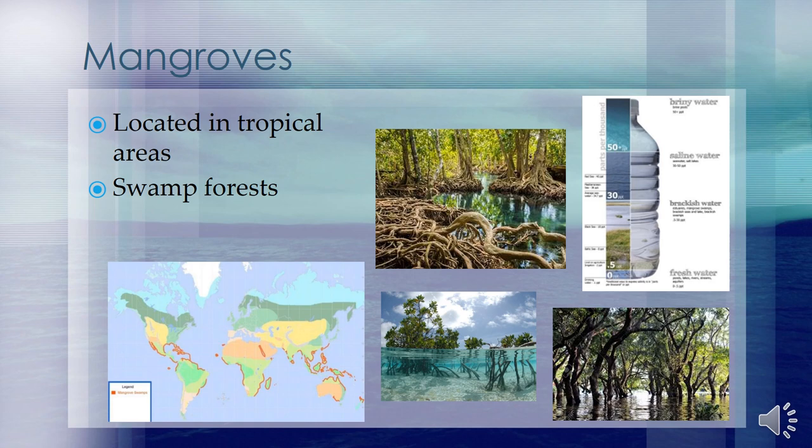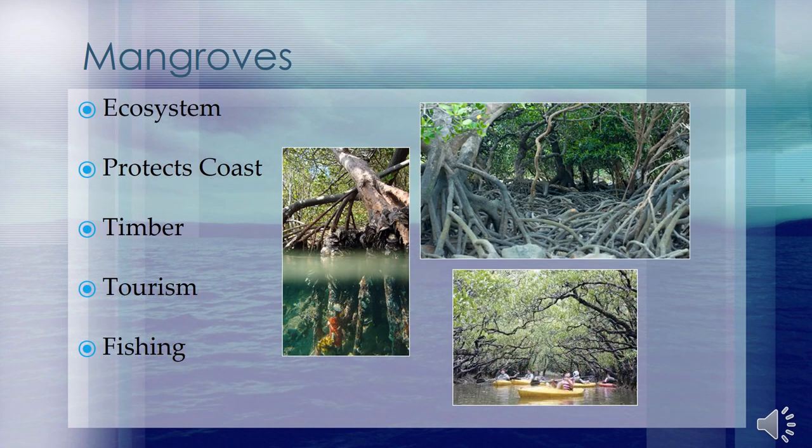Mangrove swamps cover 60–75% of tropical and subtropical coastlines. Mangroves are tropical trees and shrubs which grow in the intertidal zone in low energy and relatively sheltered shallow coastal and estuarine environments. Mangrove swamps are one of the most productive and biologically important ecosystems in the world because they provide unique products and services to both people and coastal and marine systems.